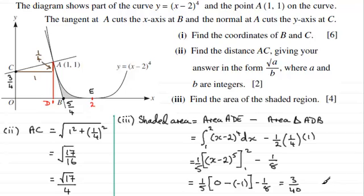So the shaded area is 3 40ths. I'm just going to write units squared, you don't have to, but I'm going to write that in just because I'm finding an area.